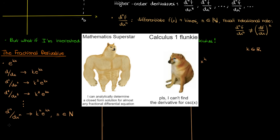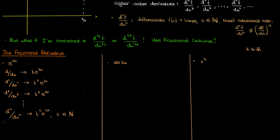We're past calculus one now, which means we care about the fractional derivative. In this case, we can easily establish the fractional derivative of e to the kx as k to the power a times e to the kx, where a is our so-called fractional order. We're just extending the logic of the nth derivative to a fractional order a. In general, a can be any complex number.